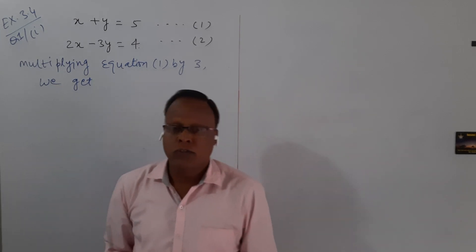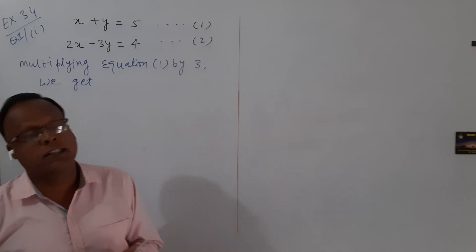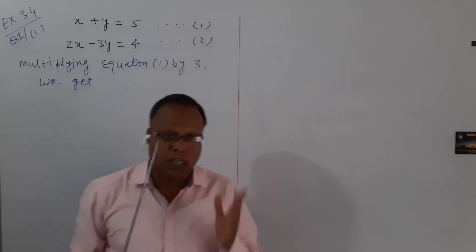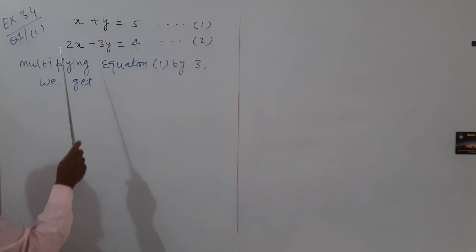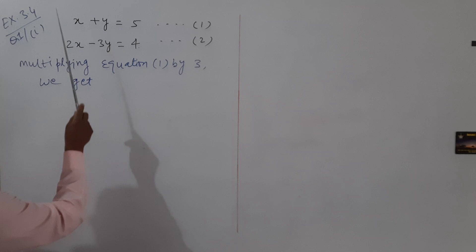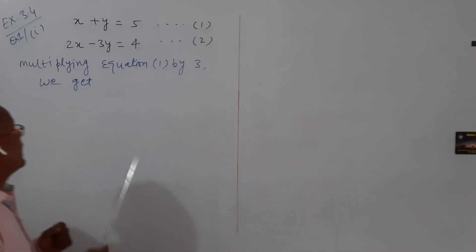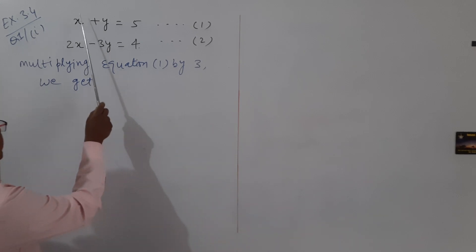To solve these two equations by the elimination method, we try to make the coefficient of variable x or coefficient of variable y the same in both equations. For example, here the coefficient of x is 1, and here it is 2. So we have to make these two coefficients the same. For that, multiply equation 1 by 2.